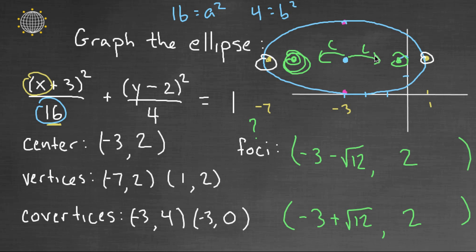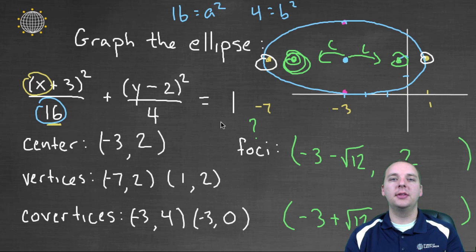So I found all the information for the ellipse, and I graphed the ellipse. And it was nice that it was already in this formula—if it wasn't already in that formula, you would have to put it in that formula before you could tell things like the center and the vertices and the a's and the b's and those sorts of things.